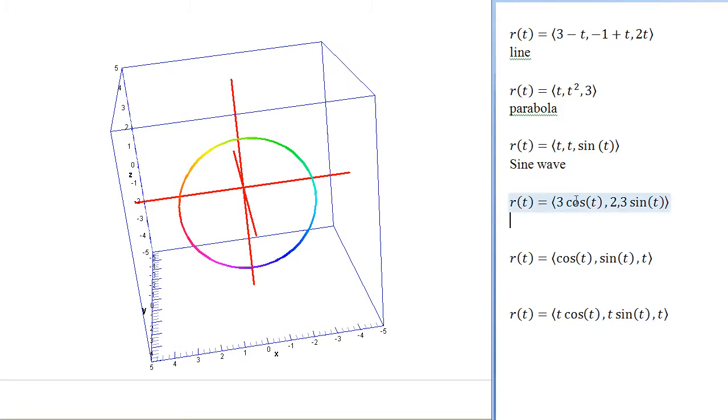So here, we are going to get a circle in x and z, with a radius, or an amplitude, of 3. And so coming over here, you can see that in x and z, we are getting a circular shape with a radius of 3.